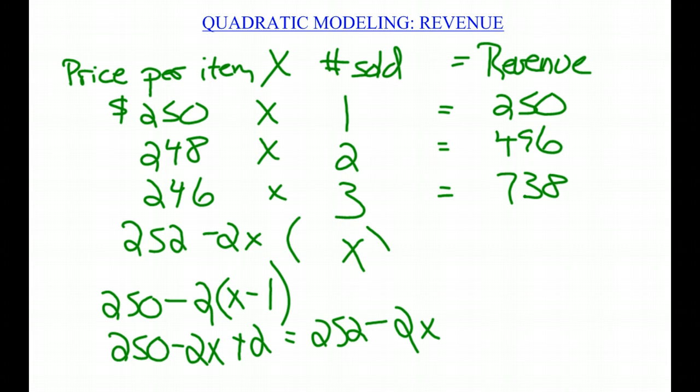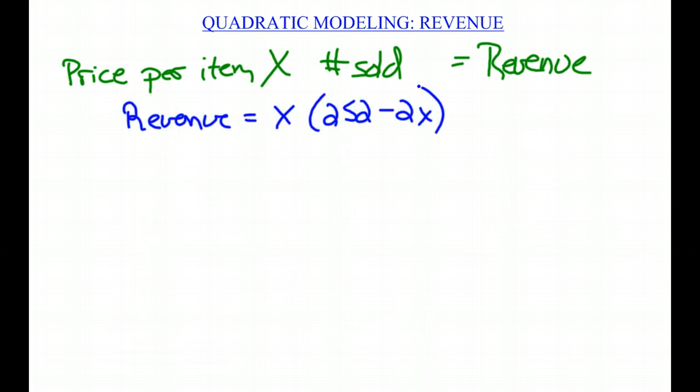Let me put that up here: $252 minus 2X multiplied by X. That's going to be the revenue. X times ($252 minus 2X). Cleaning up the board a little bit, rewriting it: the revenue is X times ($252 minus 2X), or 252X minus 2X squared.